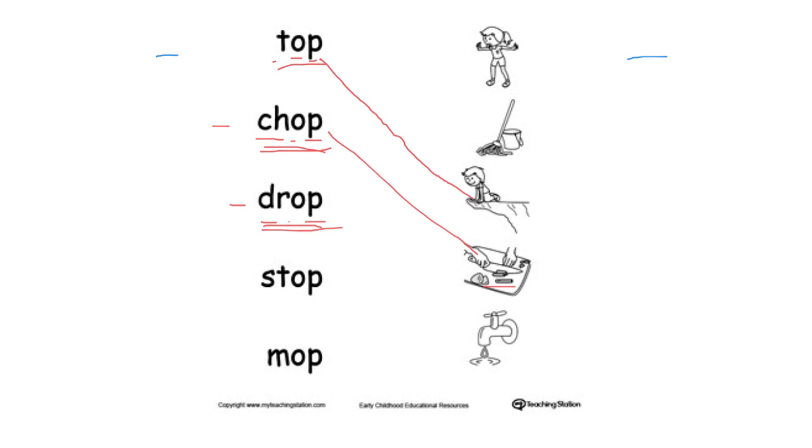And this word: stop, stop, stop. Which picture shows that? Yes, this girl points with her hand, stop. And the last word is m-o-p, mop, mop. Where's the mop? Yes, definitely this is the mop. Well done everybody.